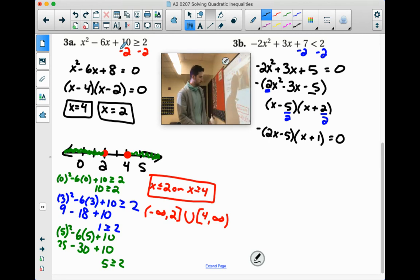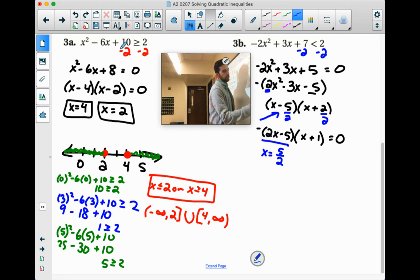So your two critical numbers you're looking for here, you can look right here. See how it says x minus 5 over 2. So x could equal positive 5 over 2, which is 2.5. So that's going to be a number we're going to have to look at. And x plus 1, that means x could equal negative 1. I see I'm running out of time here, so I'm going to start the next one actually.